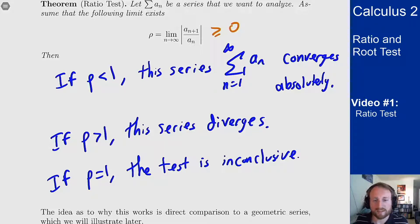The idea as to why this works is this is a direct comparison with a geometric series. We'll see that in a later video but that's sort of the idea of where this comes from. If a ratio is less than one a geometric series converges, that's why this less than one is the condition here as well.